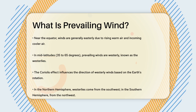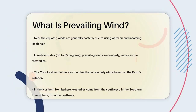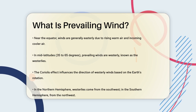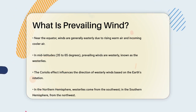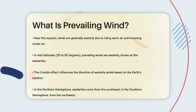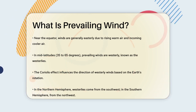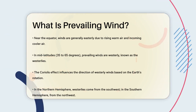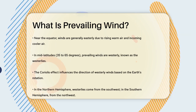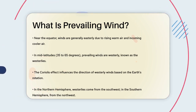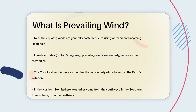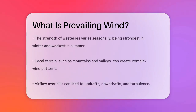In mid-latitudes, between 35 and 65 degrees latitude, the prevailing winds are westerly. These are known as the westerlies or prevailing westerlies. They blow from the west to the east and are influenced by the Coriolis effect, which is the deflection of moving objects on earth due to the planet's rotation. In the northern hemisphere, these winds come from the southwest, while in the southern hemisphere, they come from the northwest.